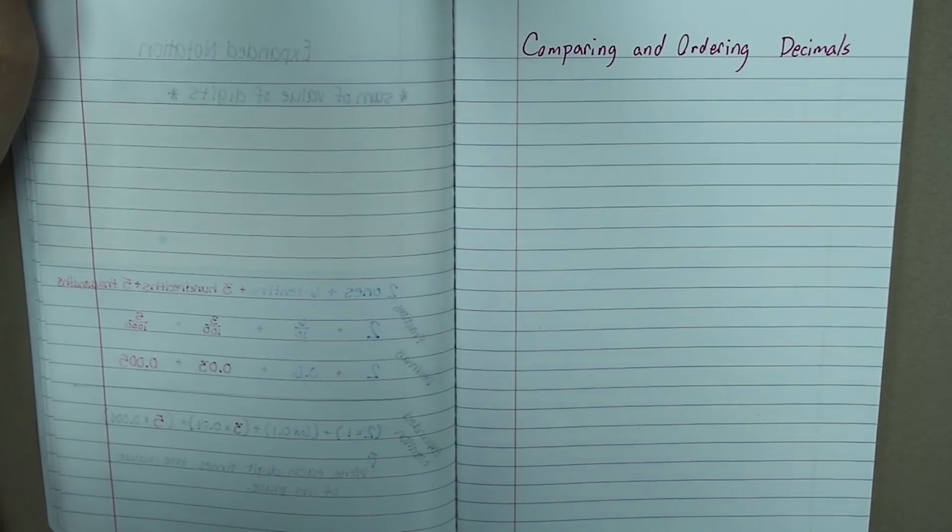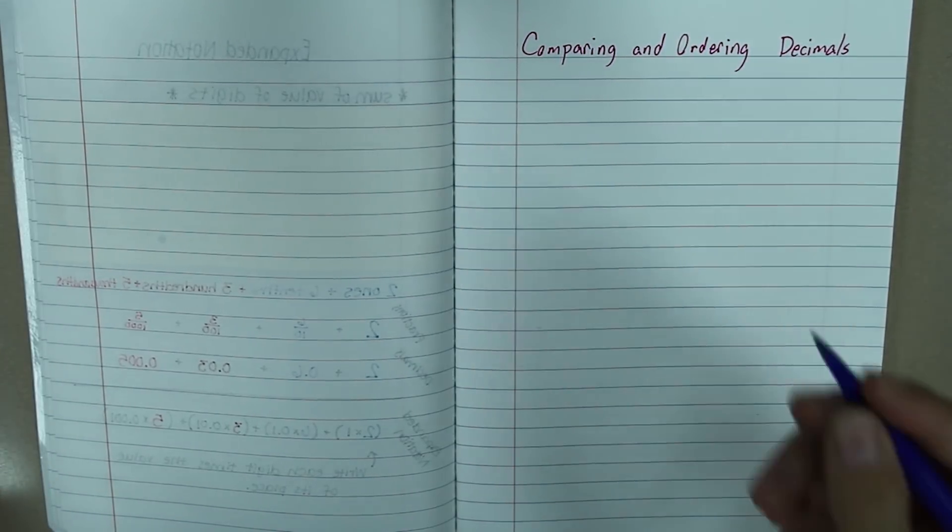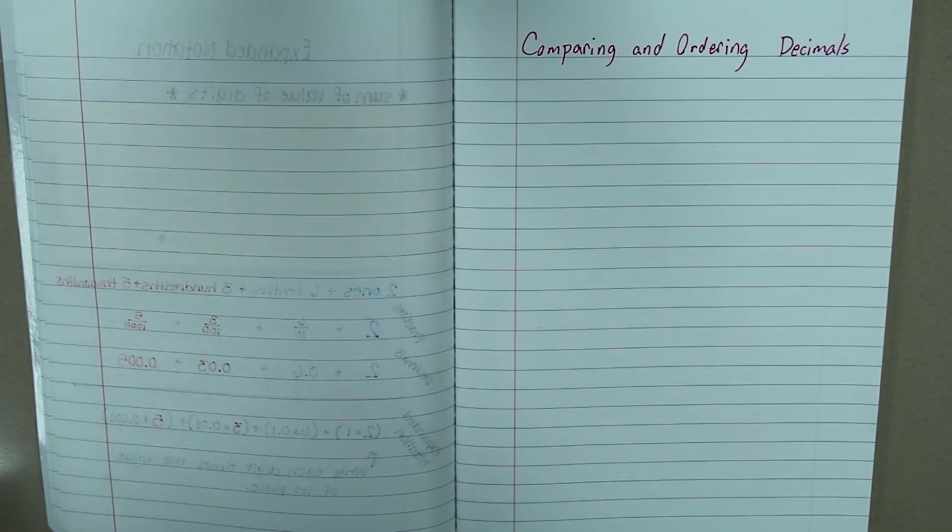Hey guys! We are going to be talking about comparing and ordering decimals. I know that's your favorite thing, right? So, what's the difference between comparing and ordering?